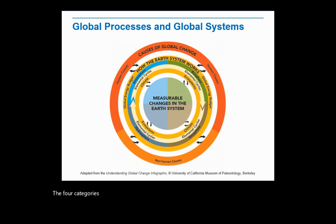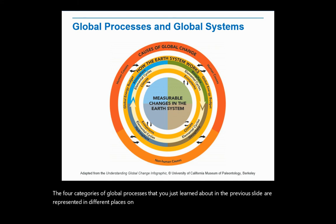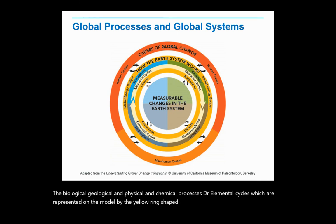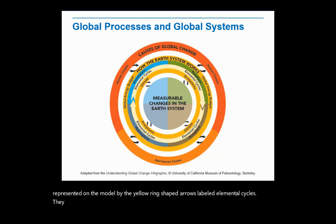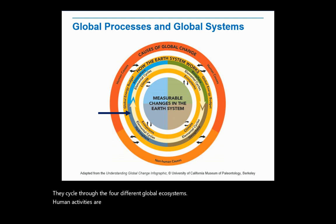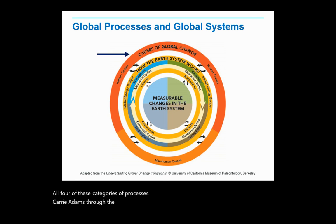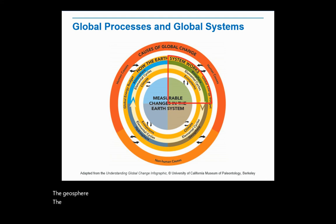The four categories of global processes are represented in different places on the understanding global change model. The biological, geological, and physical and chemical processes drive elemental cycles, which are represented on the model by the yellow ring-shaped arrows labeled elemental cycles. They cycle through the four different global ecosystems. Human activities are located on the model's outer ring called causes of global change. All four of these categories of processes carry atoms through the atmosphere, the geosphere, the biosphere, and the hydrosphere.